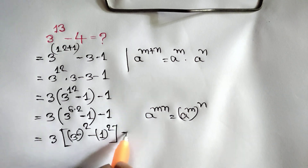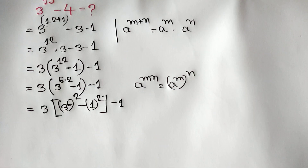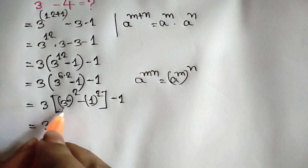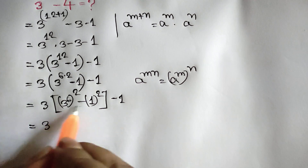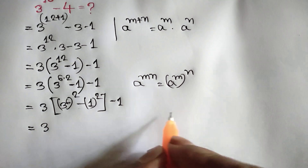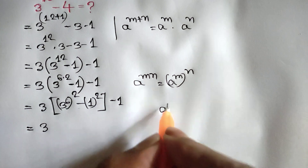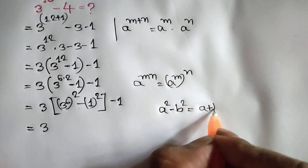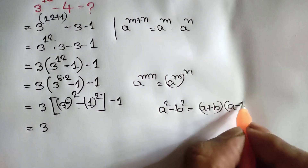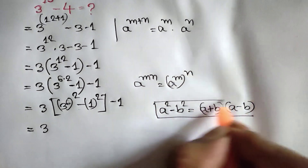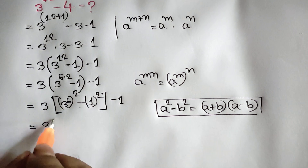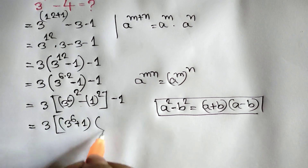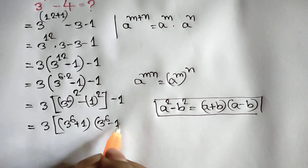Now attention here — there is a perfect square difference. So we can apply this rule: a squared minus b squared is equal to a plus b times a minus b. Applying this rule, we can write here 3 to the power 6 plus 1, times 3 to the power 6 minus 1.